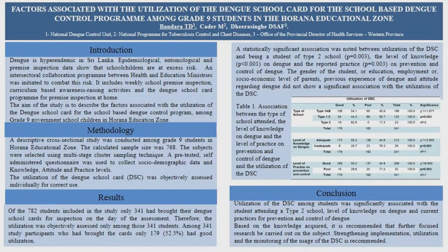There were many factors assessed, and there was a statistically significant association with good utilisation for being a student of a Type 2 school. There are several types of schools in the Education Ministry: Type 1AB — with A-level classes in science, maths, and arts; Type 1C — with A-level classes in arts only; Type 2 — up to O-level; and Type 3 — up to primary. Type 3 schools were not involved as we were taking Grade 9 students. Being a student of a Type 2 school increased the chances of utilisation of the Dengue School Card. Increased level of knowledge and increased level of reported current practices also significantly increased utilisation.